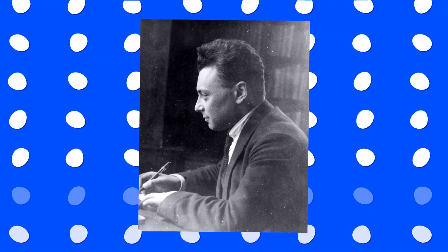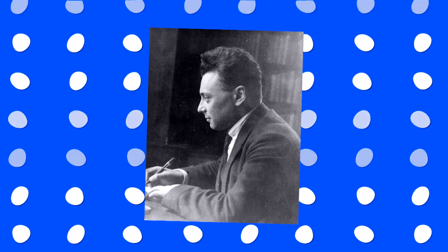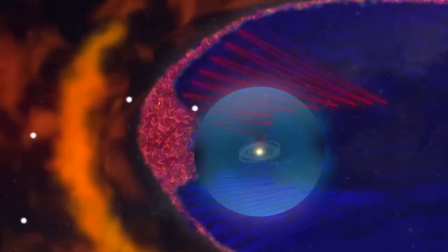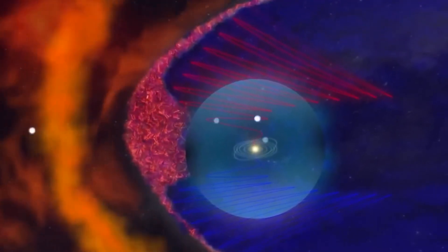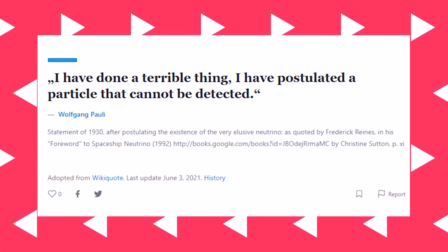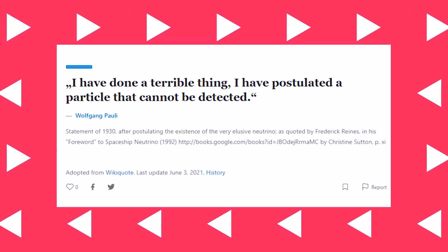Wolfgang Pauli suggested in 1930 that instead of traveling in the opposite direction as the electron, an additional particle may be departing the nucleus and bringing along the missing energy and momentum. Pauli himself was aware that the particle he had proposed cannot be identified. He told a friend, 'I've done a terrible thing. I propose a particle that cannot be found.'